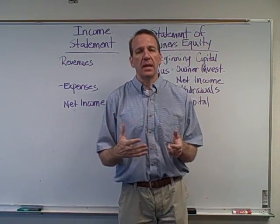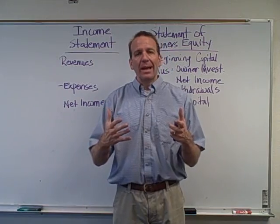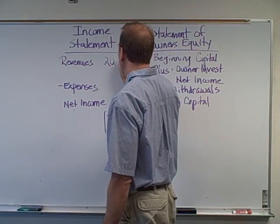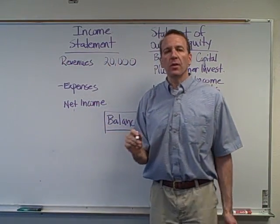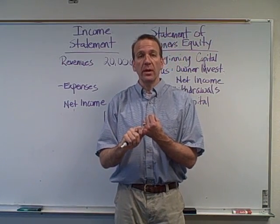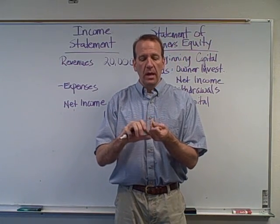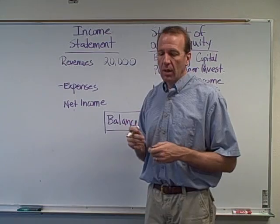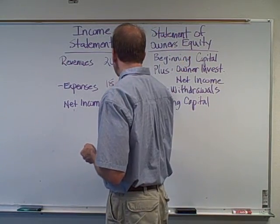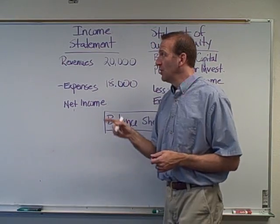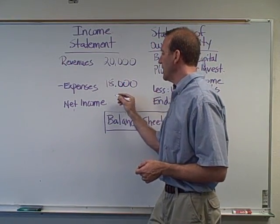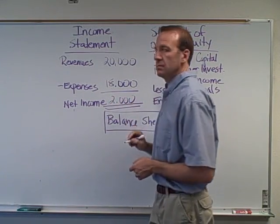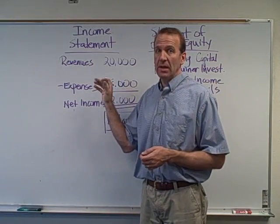Let's say we look at all of our pizza sales, drinks, salads, and whatever we sell in our business. Let's say the revenue — our sales — are $20,000. Then we go to all of our expenses: wage expense, paying our employees, some supplies expense, gas for the car, different expenses like that. Let's say when we total all those expenses up, they total to $18,000. So we have revenue of $20,000 and expenses of $18,000, meaning our net income is going to be $2,000. This would be a very simplified income statement.